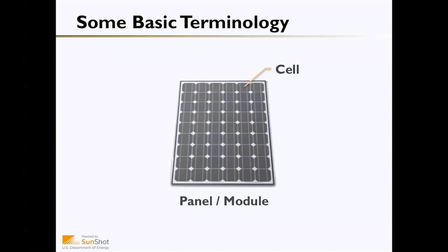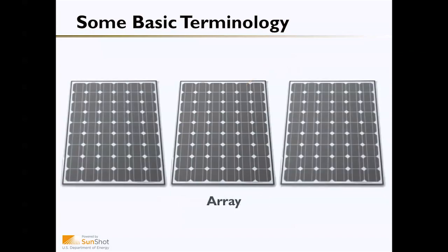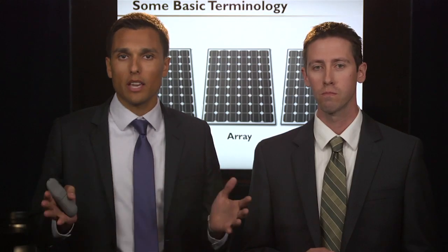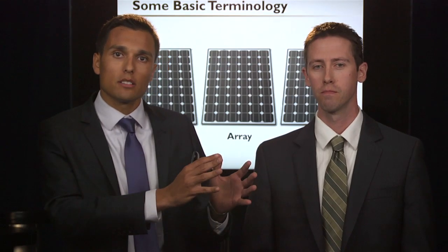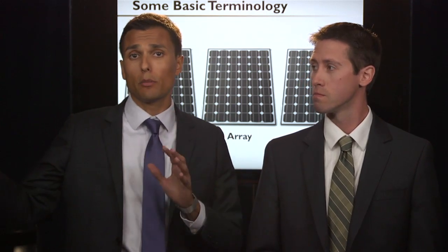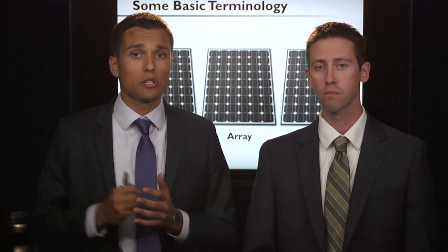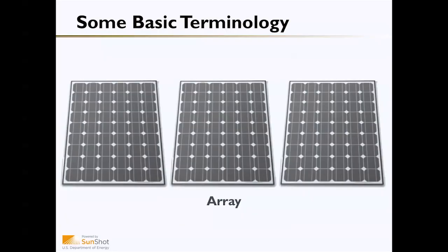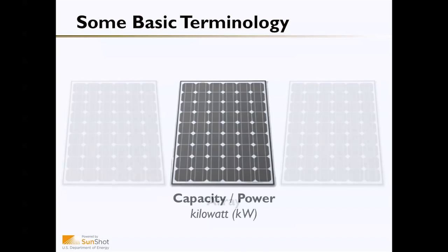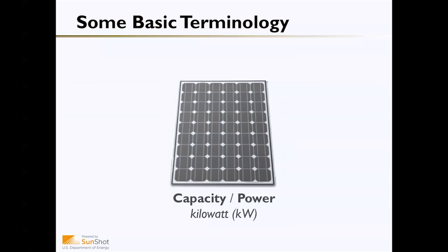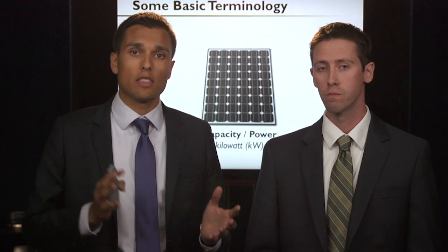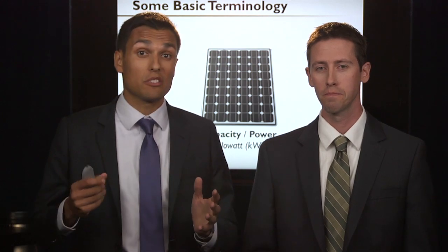We're focusing on solar photovoltaics, which is typically what you see on rooftops and commercial buildings and is used to create electricity. Solar PV panels, or modules, are made up of individual photovoltaic cells. The great thing about solar PV technology is that it's incredibly scalable — from small installations on residential rooftops all the way up to huge commercial or ground-mounted installations. When you put a series of panels together it's called a solar array. The panels are measured in terms of capacity or power, using watts, kilowatts (a thousand watts), or megawatts (a thousand kilowatts).